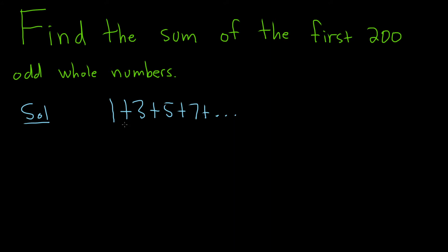So you'll notice that if you think of these numbers as a sequence, if you think of the terms of the sum as a sequence, 1, 3, 5, 7, it's an arithmetic sequence. So we can use the formula for the sum of the first n terms of an arithmetic sequence in order to do this problem.